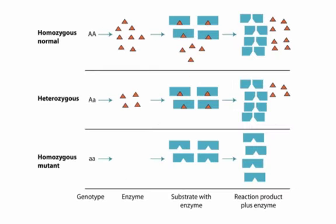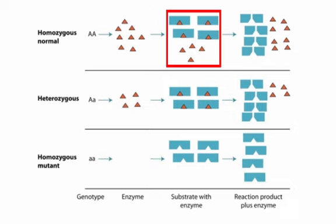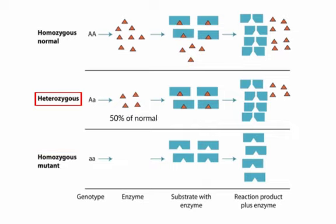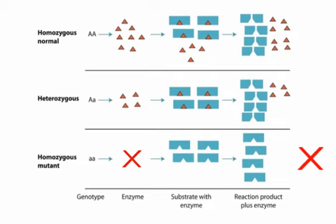Why are autosomal recessive traits recessive? At least for an enzyme deficiency, the answer comes from the catalytic nature of enzymes. If we imagine that the red triangles are the enzyme and the blue squares are the substrate, normally the enzyme binds, cleaves the substrate, and is released to bind additional substrate. A homozygous individual for a mutation produces no enzyme whatsoever, and hence the reaction fails to occur. But a heterozygous individual might produce 50% of the normal amount of enzyme, and because of the catalytic nature of enzymes, that may be sufficient to carry out the reaction to a point where no phenotype is seen. It takes complete reduction of enzyme levels to actually fail to carry out the reaction and result in a phenotype.